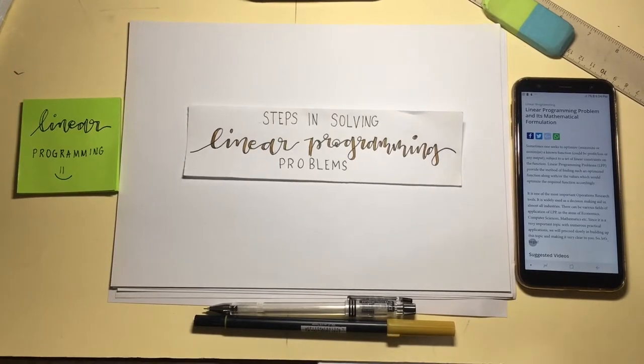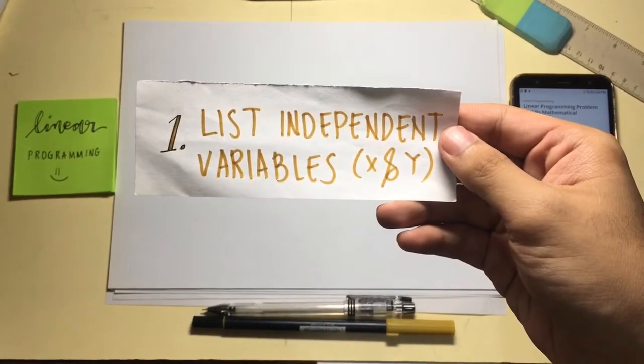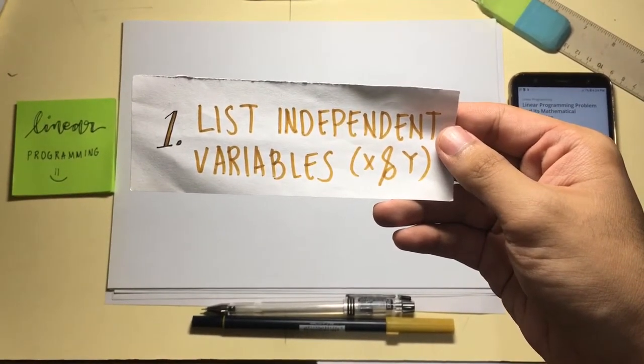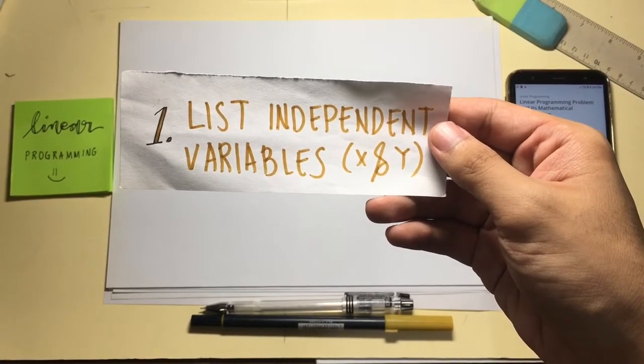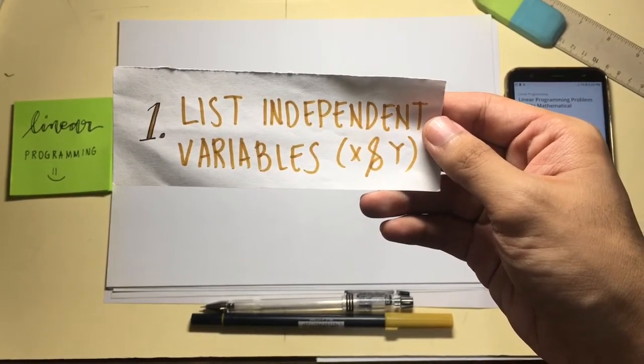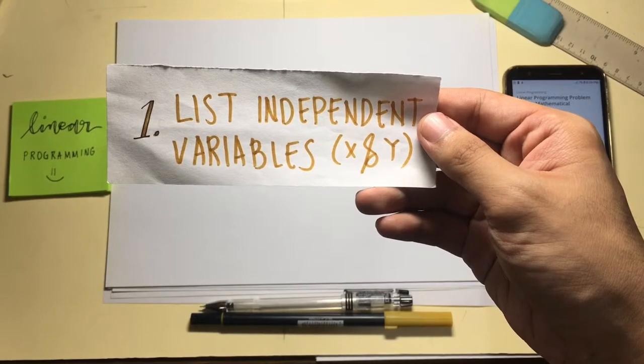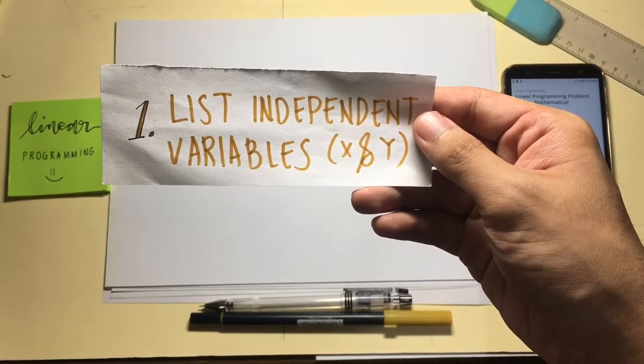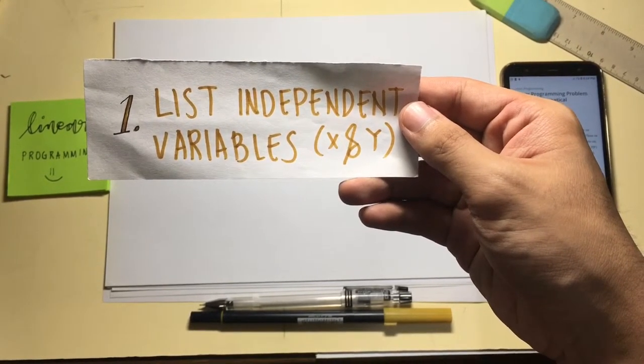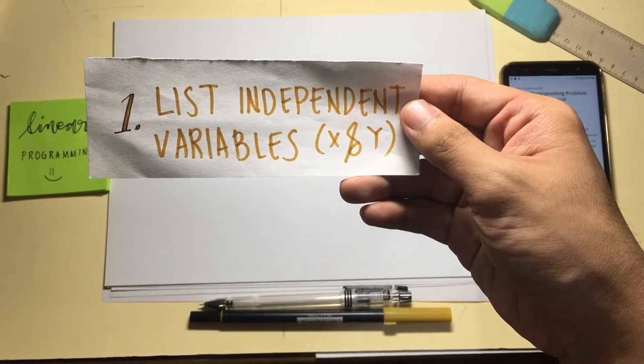Step 1 is to list the independent variables, also called decision variables. These are the variables that directly affect a problem or situation. They usually tell us what quantity to buy, produce, sell, or transport.